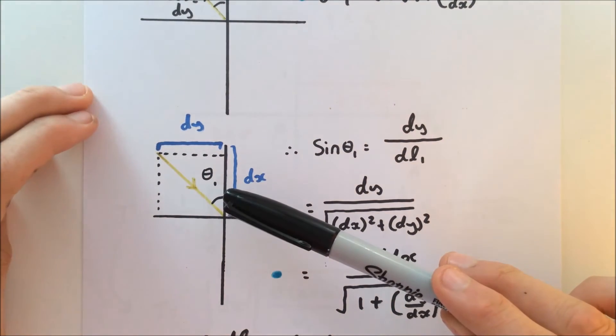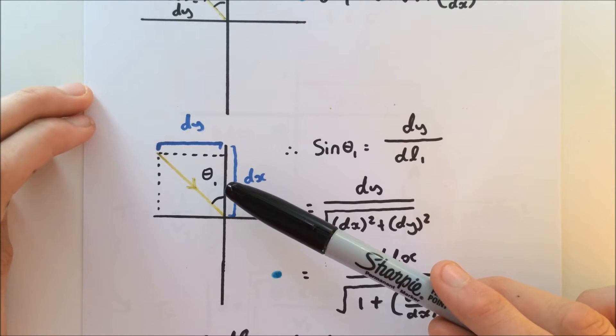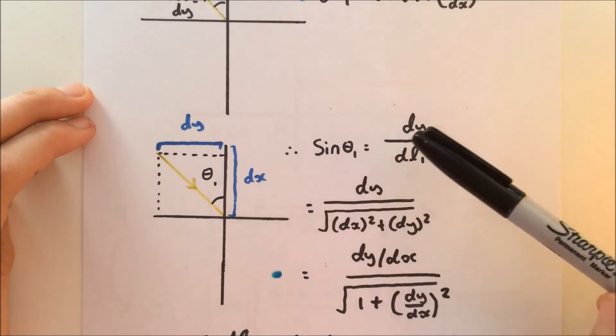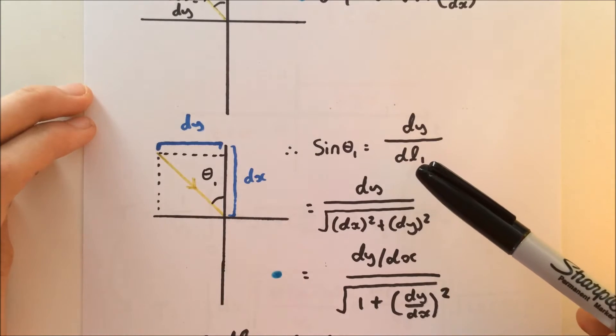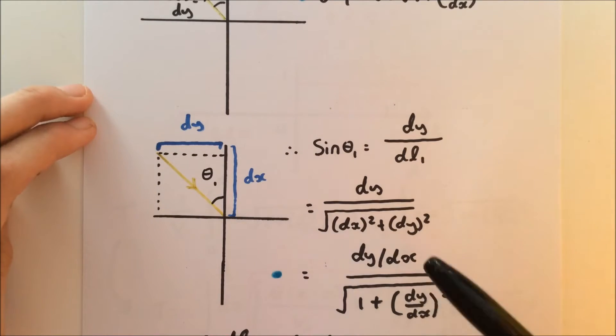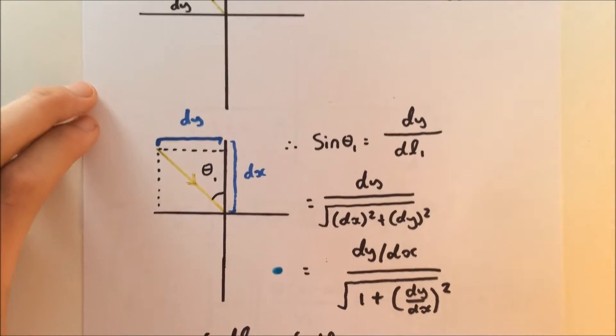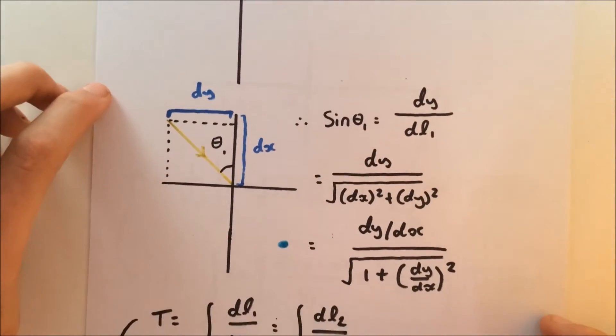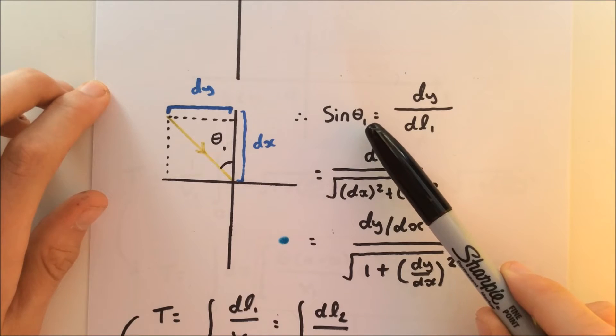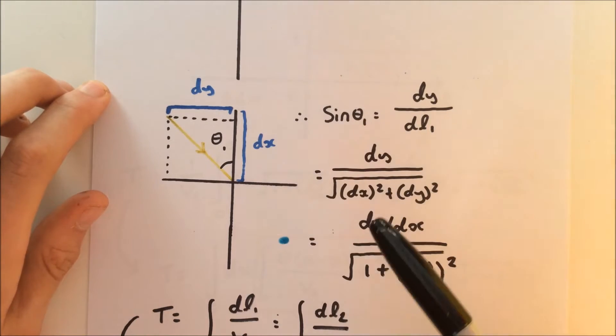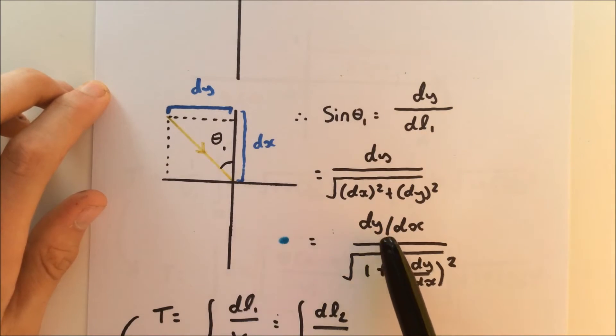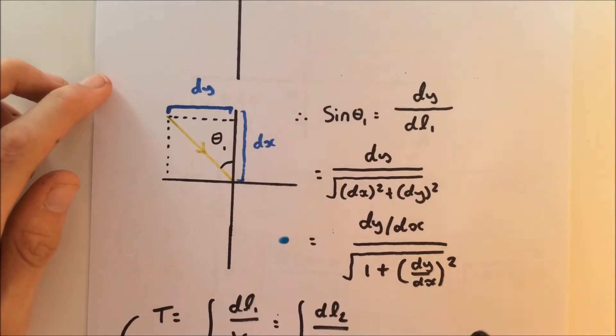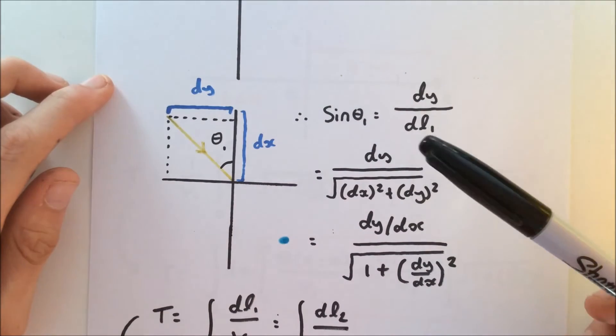Now, what is the sine of the angle? The sine of theta 1? Well, it's simply dy divided by the hypotenuse. But DL1 is the square root of dx squared plus dy squared. Using the format we had up here, we can therefore say that the sine of theta 1—this is important, so you need to remember this—the sine of theta 1 is equal to dy/dx divided by the square root of 1 plus dy/dx squared. This is the same in medium 1 and medium 2, so that could be sine theta 2 as well.